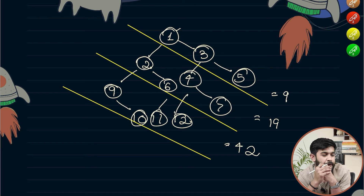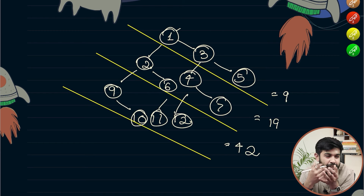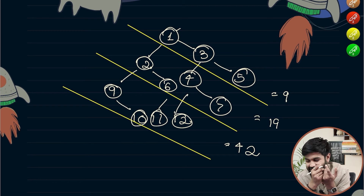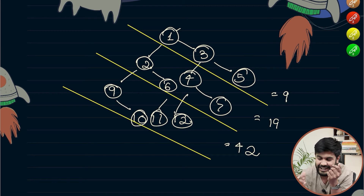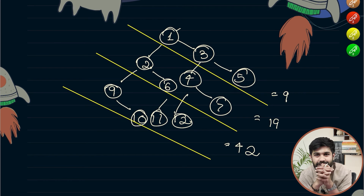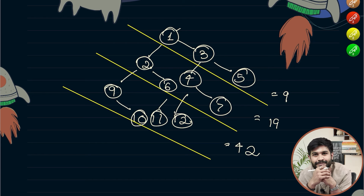Whenever we talk about diagonal traversal in a matrix or a tree, I get afraid too. I never really had this question in competitive programming, and I come from a competitive programming background. So for me also this was a nightmare. Let's talk about this problem.